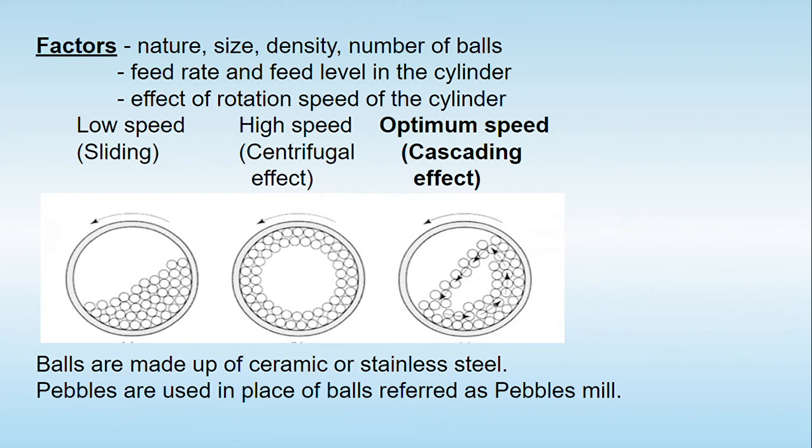The third most important factor to be considered for the ball mill is its rotation speed. The rotation speed of the cylinder is important because it will decide whether proper size reduction is going to take place or not.